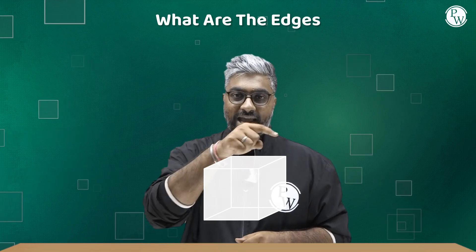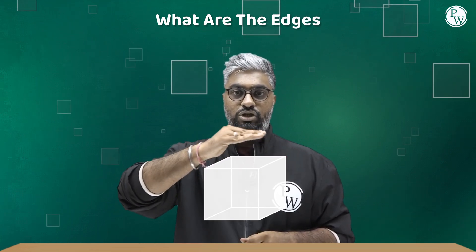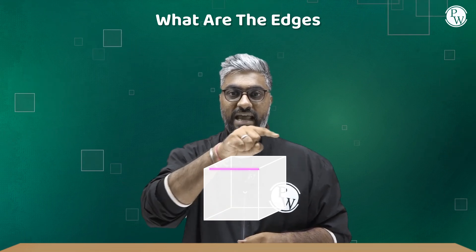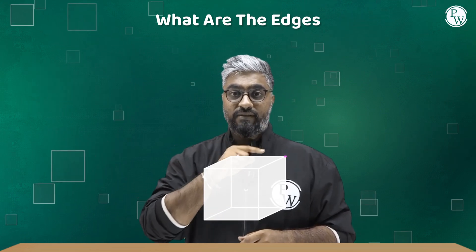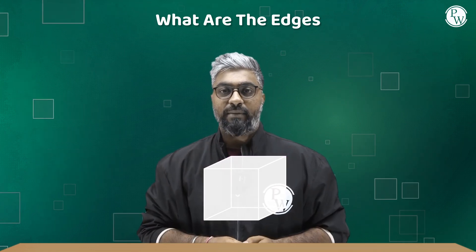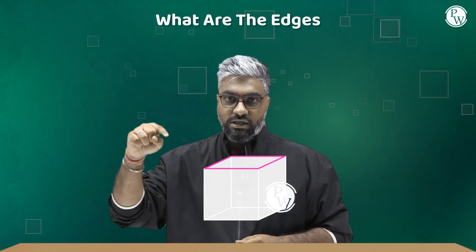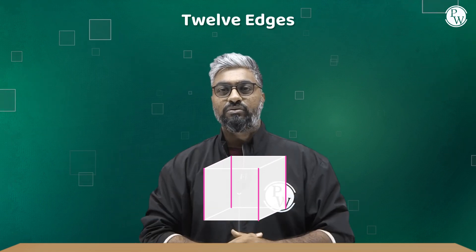Now on these six faces, if you focus properly, you come across 12 edges. Edges are the lines that join two faces. So if you look at the top and the front face, we have an edge there. If you look at the top and the back face, we have an edge there. Like this, we have 12 edges — 4 on the top, 4 at the bottom, and 4 on the sides, adding up to 12 edges.